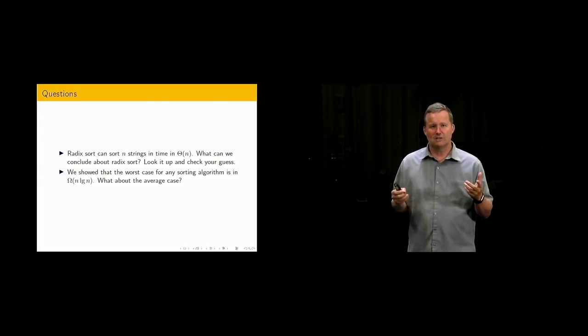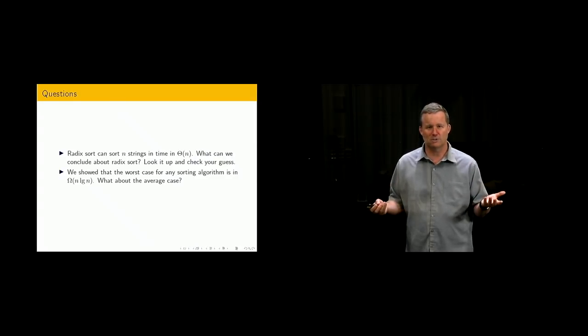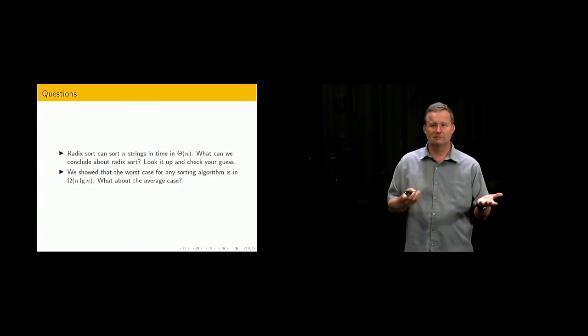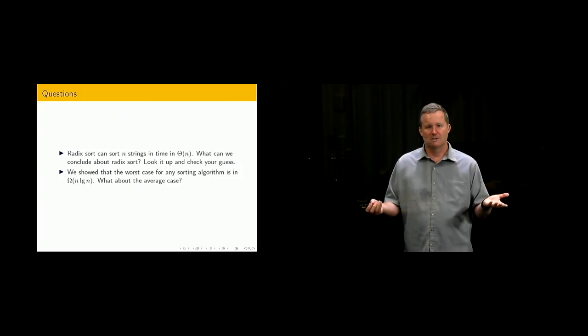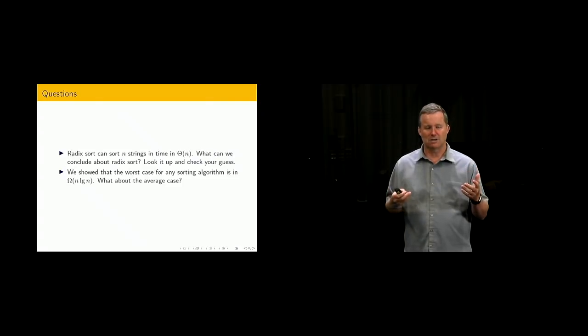Second question involves average case behavior. We've shown that in the worst case, every comparison-based sorting algorithm runs in order n log n time. What about the average case? Is it possible the average case could be order n, for example? We know the best case can. What about the average case? It's reasonably tricky to do, but something to think about, using similar methods to what we've already used in the lecture today.